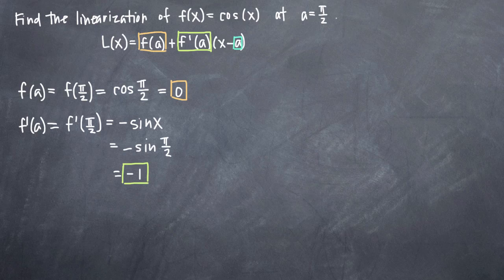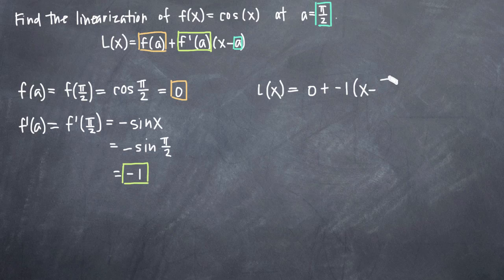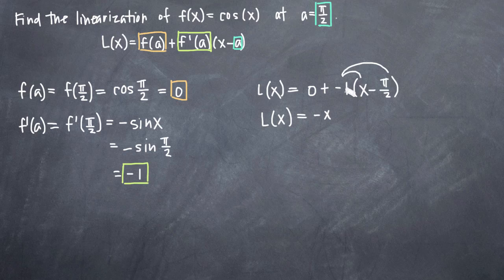And then finally, we already know that a is equal to pi over 2 — we were given that. So now we have all three values that we need to plug into our linearization formula. We'll say that L of x is going to be equal to 0 plus negative 1 times x minus pi over 2. We just plug in those three components and now we simplify as much as possible. Obviously the 0 goes away, and we'll distribute this negative 1 across x minus pi over 2. So we'll get negative x, and because we have two negative signs they'll cancel and we'll get a positive sign. 1 times pi over 2 is just pi over 2. That is the linearization of cosine of x at the point a equals pi over 2.